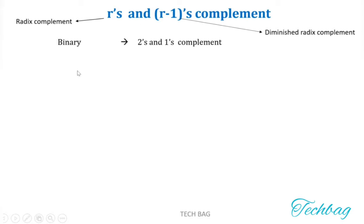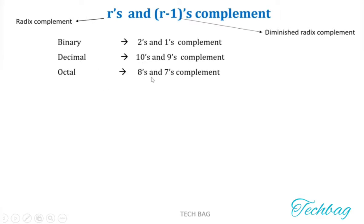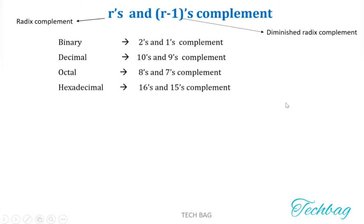For the decimal number system, there are 10's complement and 9's complement. For the octal number system, there are 8's complement and 7's complement. For the hexadecimal number system, there are 16's complement and 15's complement. 15 is represented by F in hexadecimal, so you can call this F's complement.